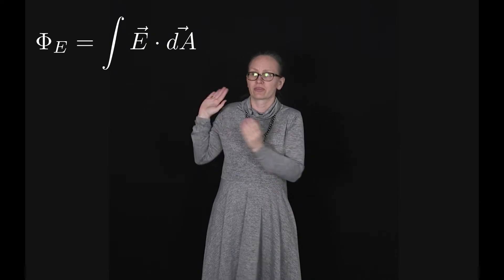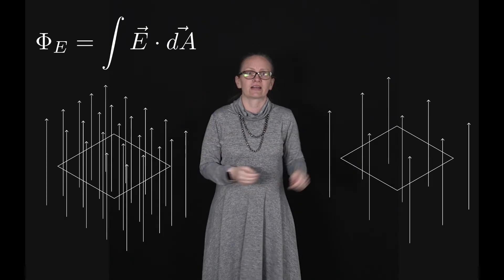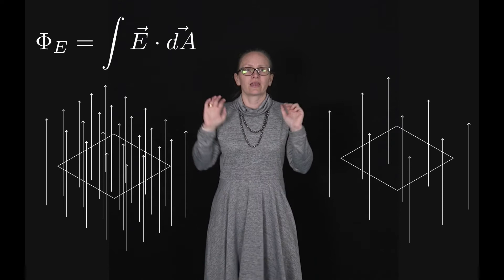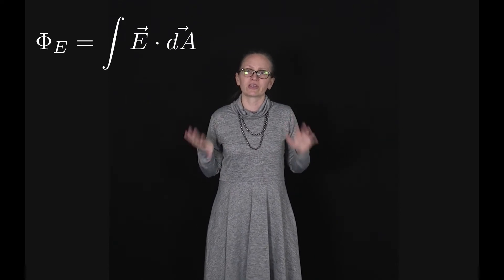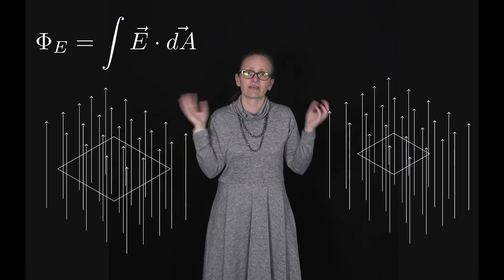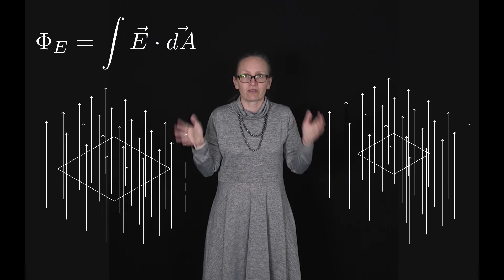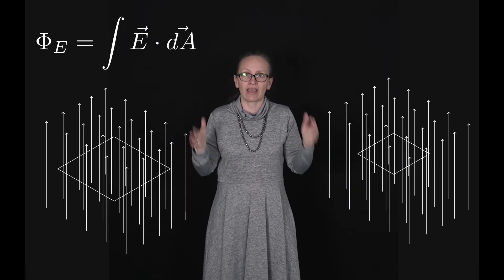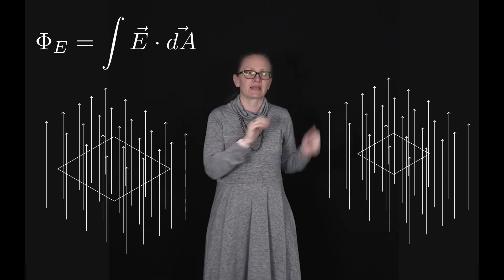So for example this has a higher electric flux than this. It's also going to depend upon surface area. If we have a larger surface area then we have more electric field lines passing through our area. So this one is bigger than this one.